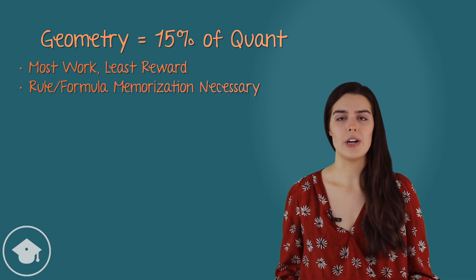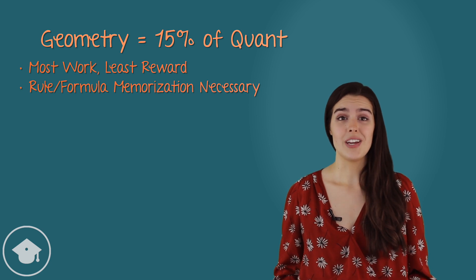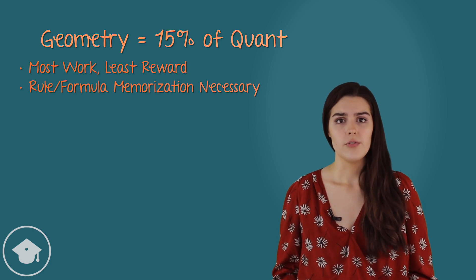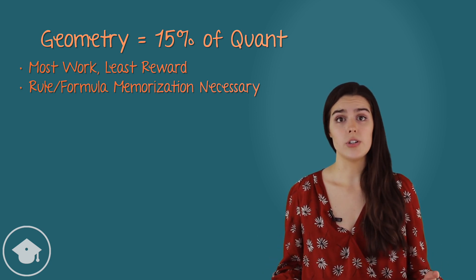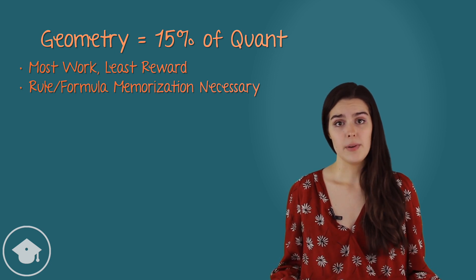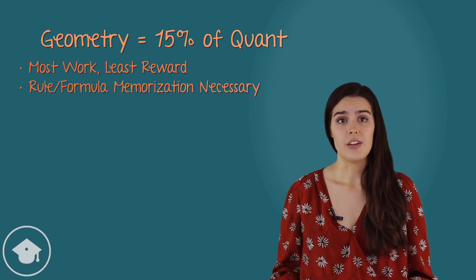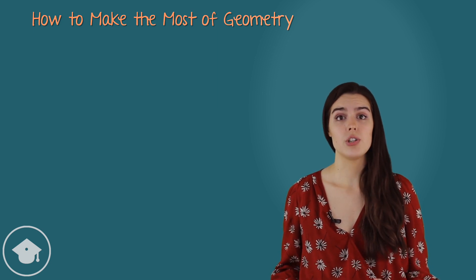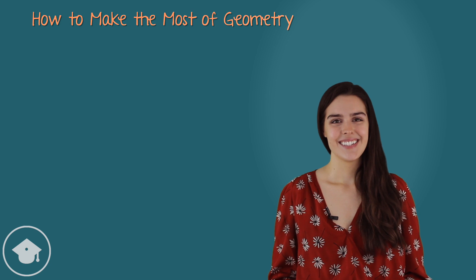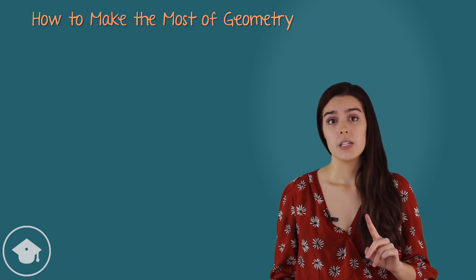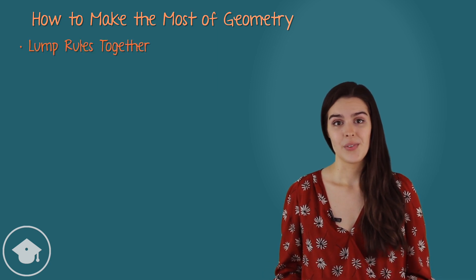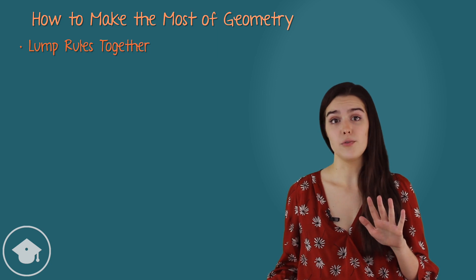For geometry, that math is memorization heavy, more so than any other type of quant question on the test. A single question may utilize a variety of formulas and rules, from triangles to circles to quadrilaterals to lines and angles, and missing even one step in a multi-step problem can prevent you from answering the question. That said, there are ways we can make the most of these challenging problems, both in our study and in our approach to the problems themselves. While there are many rules and formulas to memorize, many can be lumped together for easier memorization. We'll go through five of the most helpful sets of rules here.